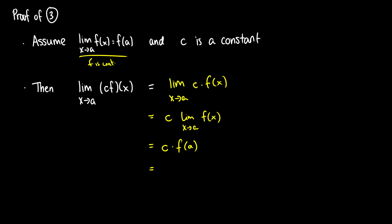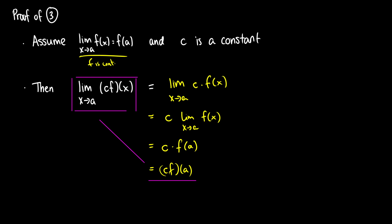We have c times the limit as x approaches a of f(x), and by our assumption that equals f(a). Grouping c and f together gives us c·f(a) equal to the limit as x approaches a of c·f(x). We've shown the limit equals the value, which means we have continuity. These proofs are all very similar. I encourage you to try proofs two, four, and five on your own.